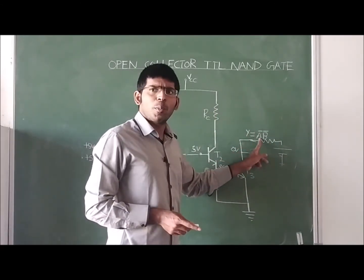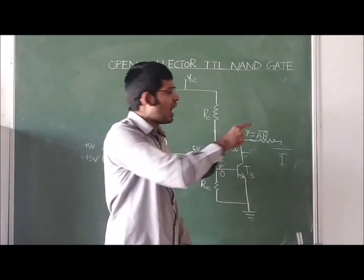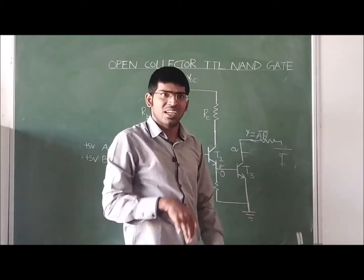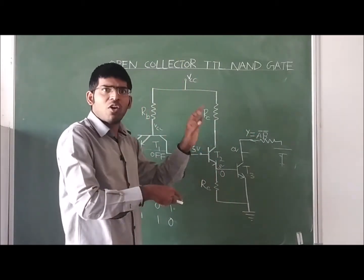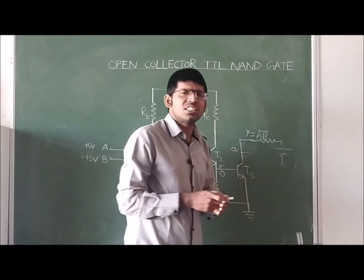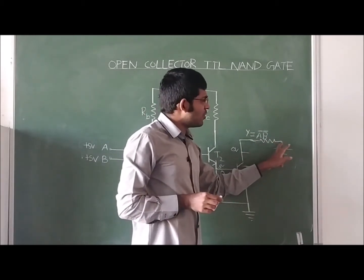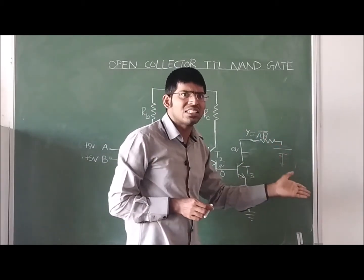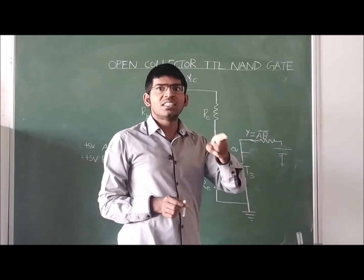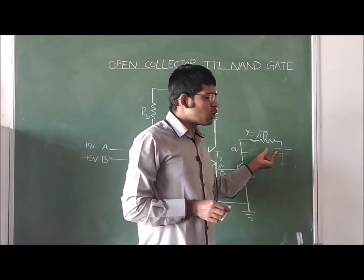Since T3's collector terminal is open, there is no way to get the output, so we connect an external resistor. This resistor is not inside the IC; we connect it externally on the breadboard to the collector terminal. If this external resistor is connected to the supply, we call it a pull-up resistor. If connected to ground, it would be called a pull-down resistor. Here we use a pull-up resistor.